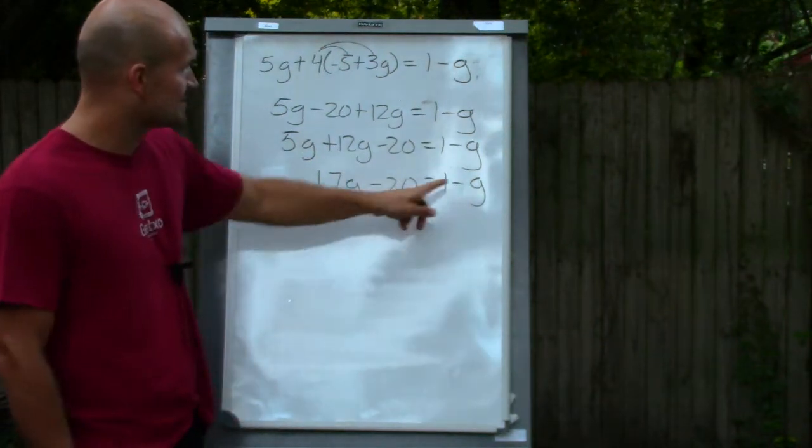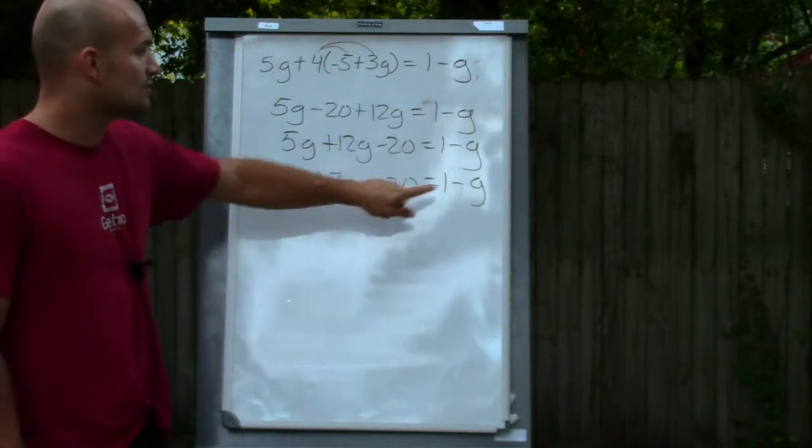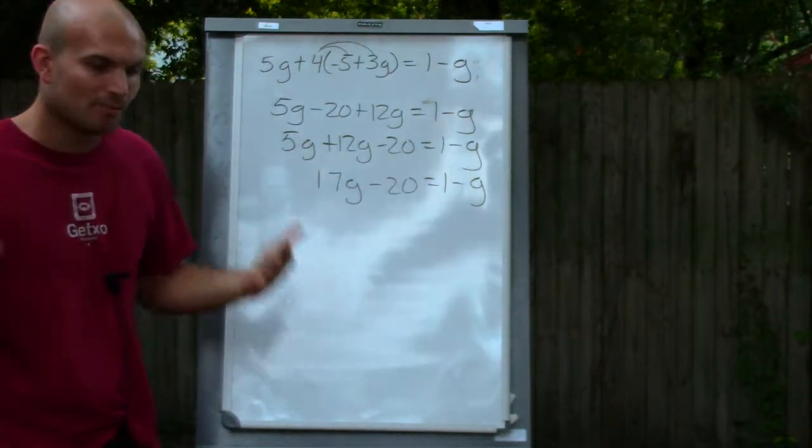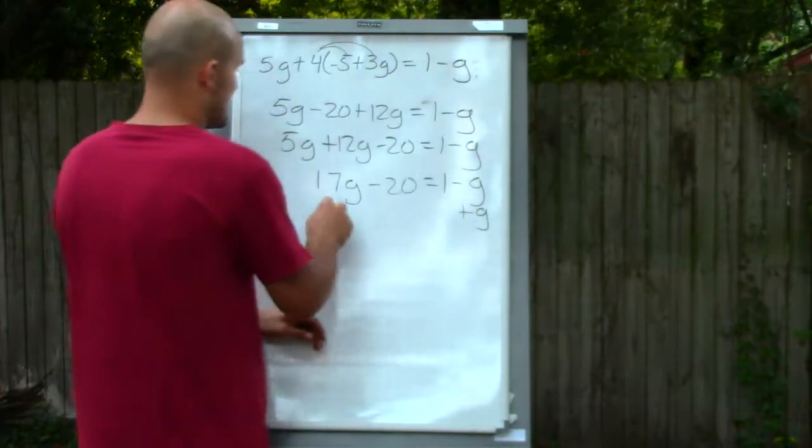So what I have is, I have a negative 1 in front of this g and a 17 in front of this g. So that means I'm going to want to get rid of the g on the right side. So remember, by using equivalent equations, I can add a g on both sides.